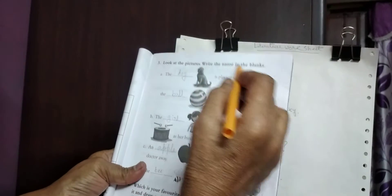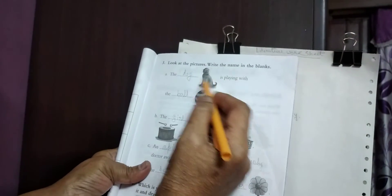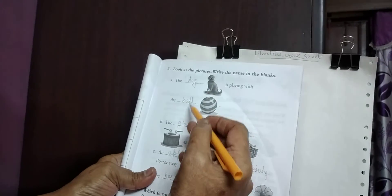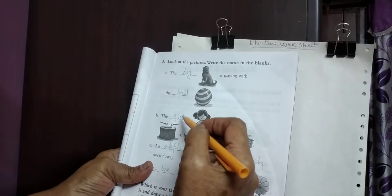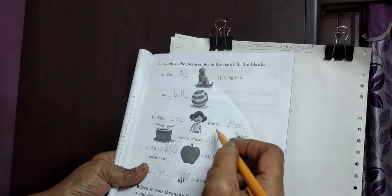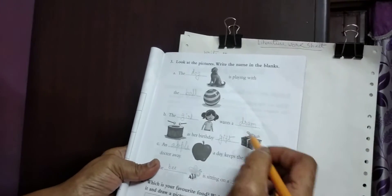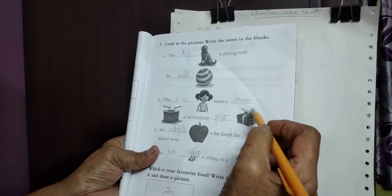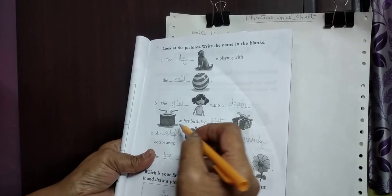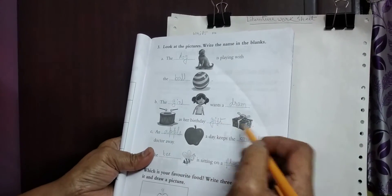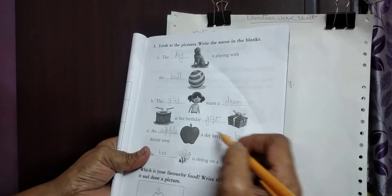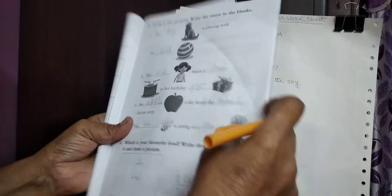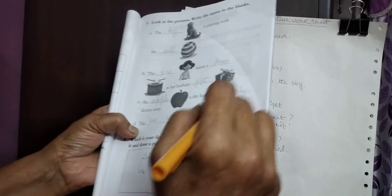Look at the picture, write the name in the blanks. Look, fill in the blanks with dog. Fill in the blanks with ball. Fill in the blanks with girl. Here, fill in the blanks. The girl wants a drum. Fill in the blanks with drum, D-R-U-M, as her birthday gift. Fill in the blanks with gift. An apple, fill in the blanks with apple. Here keep the doctor away. A bee, fill in the blanks with B, is sitting on a flower.